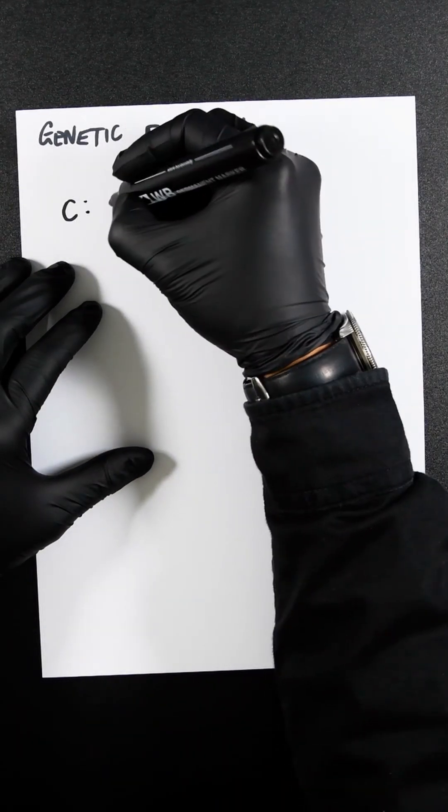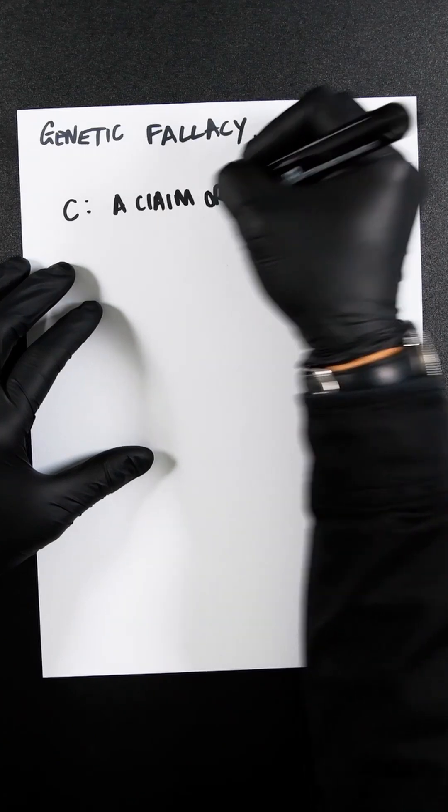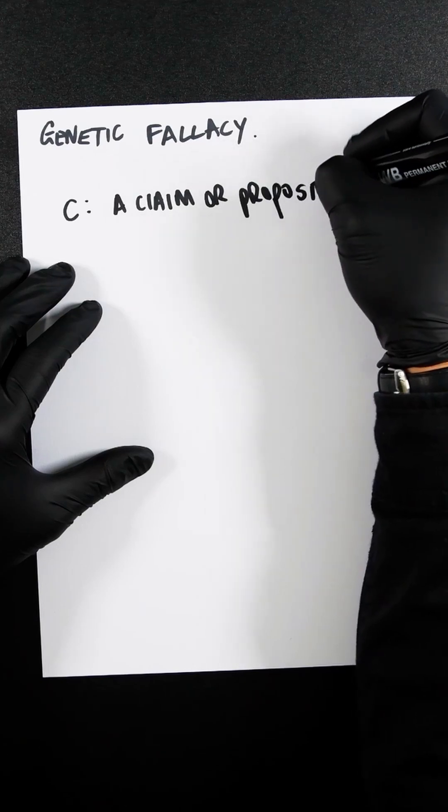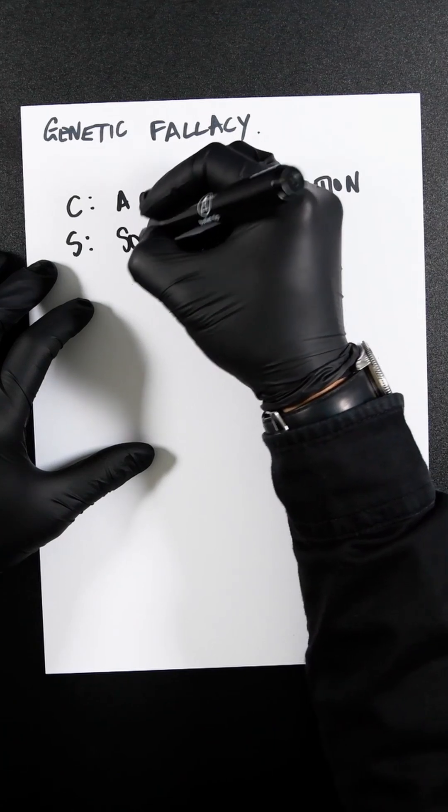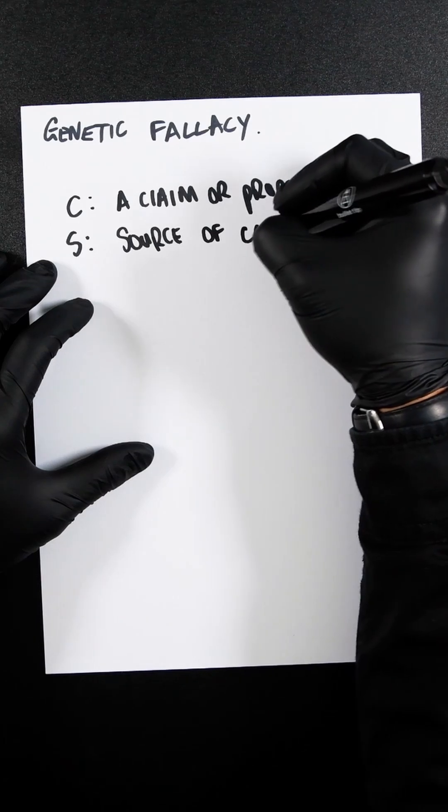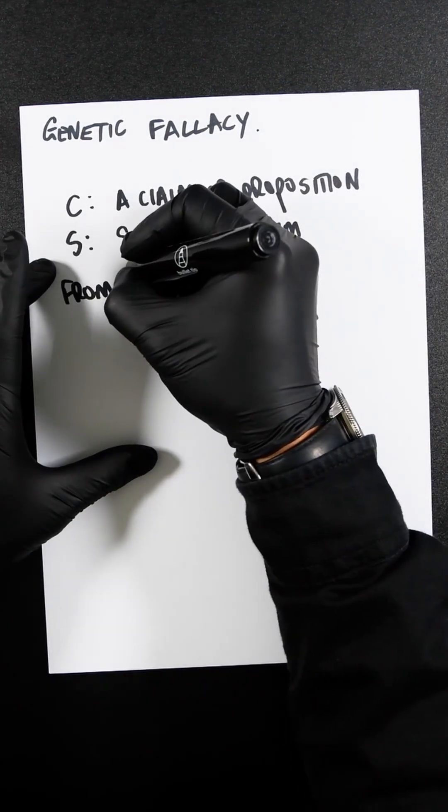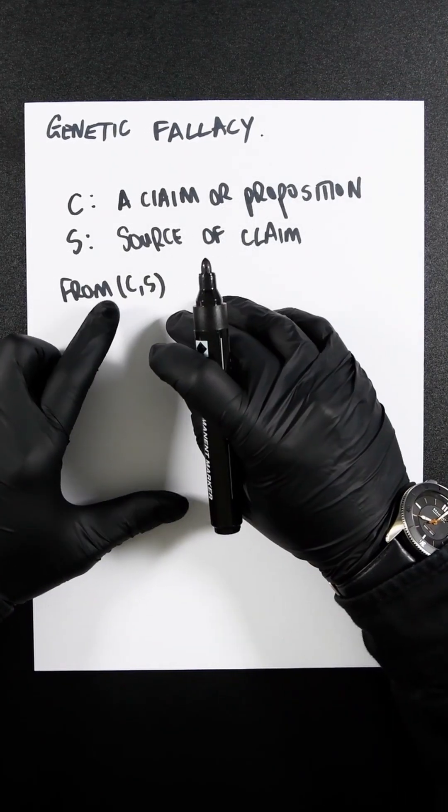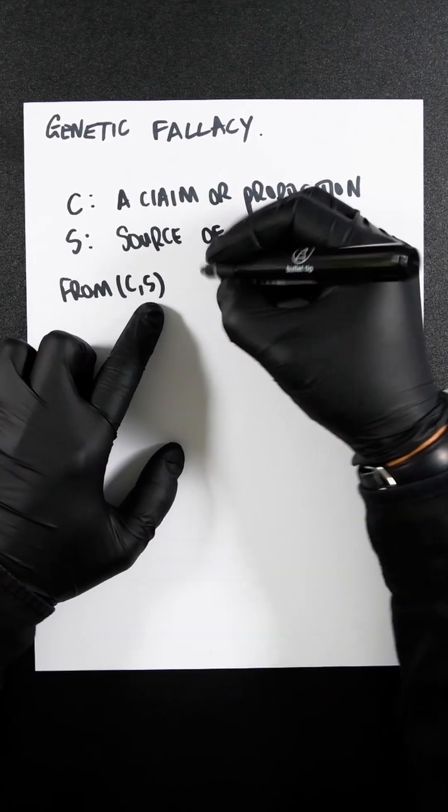So if let's say we have C, which is the claim or proposition, which is the correct term, and let's say we have a source, which is source of claim. We need to have our first bit of predicate here. So if we know how to read predicates, it's going to be claim C originated from source S.